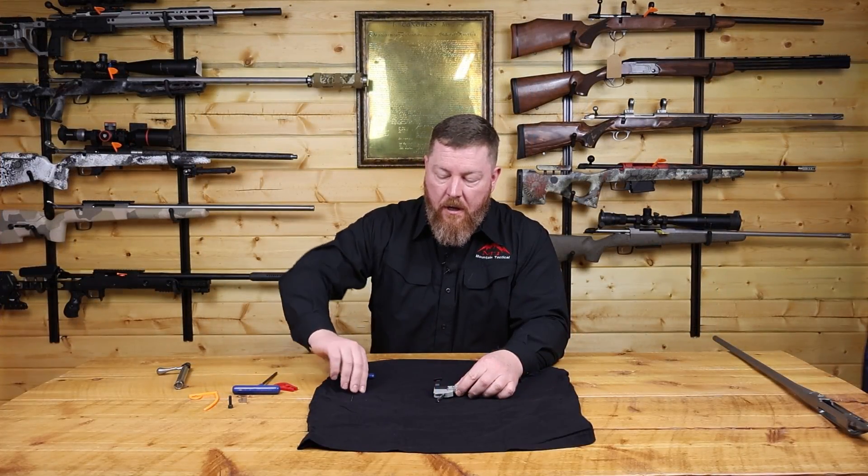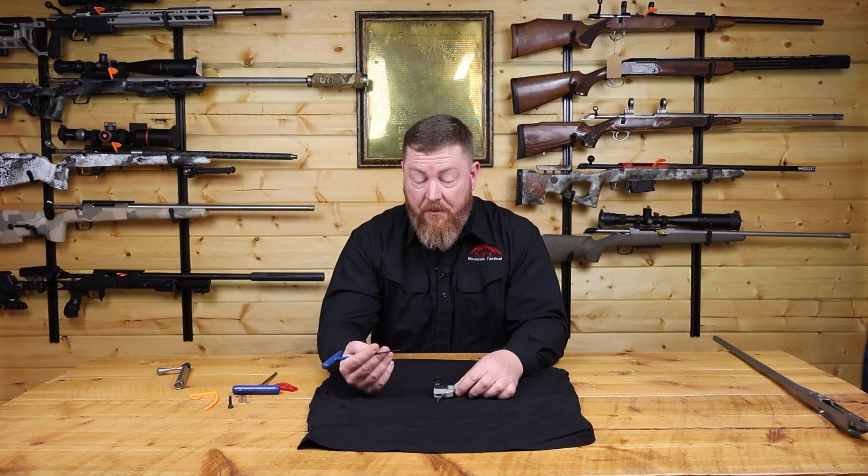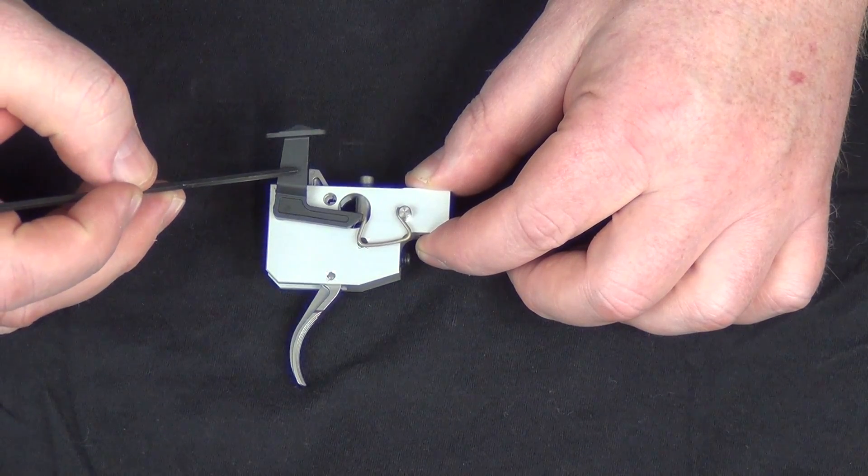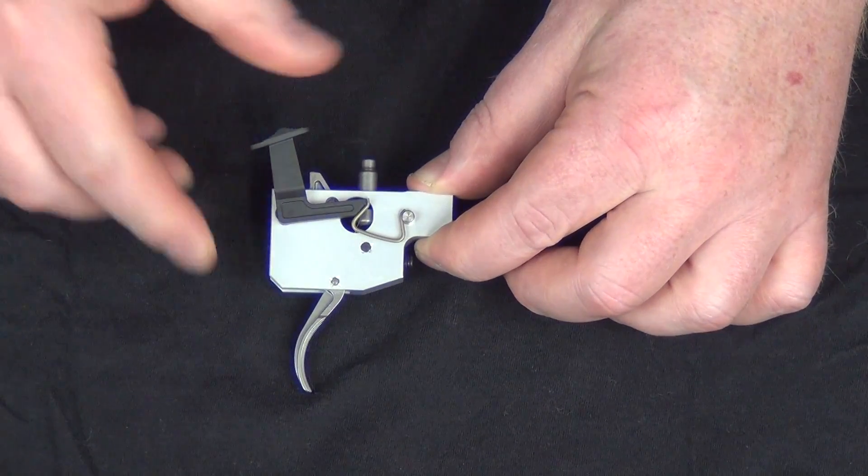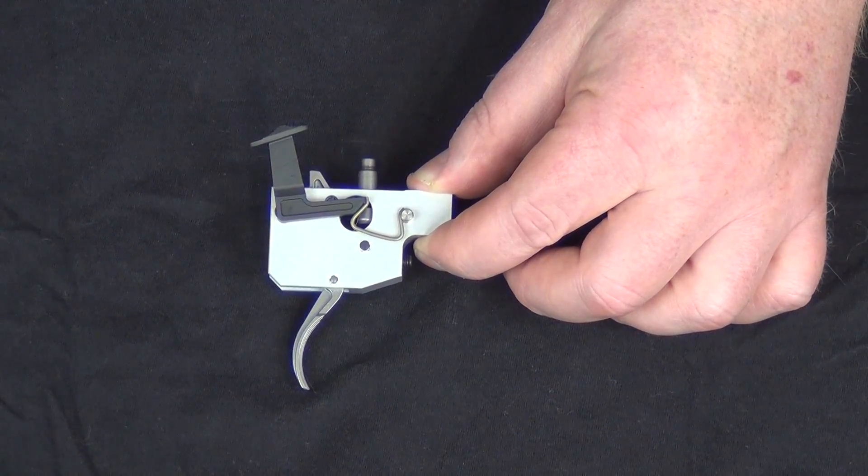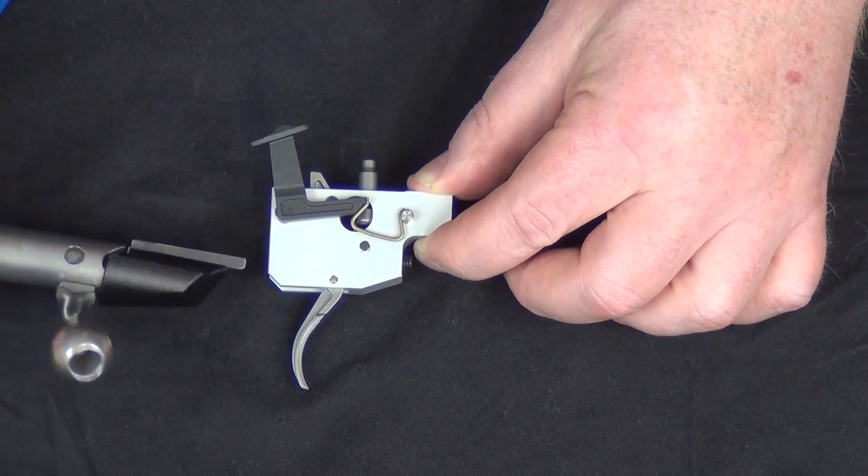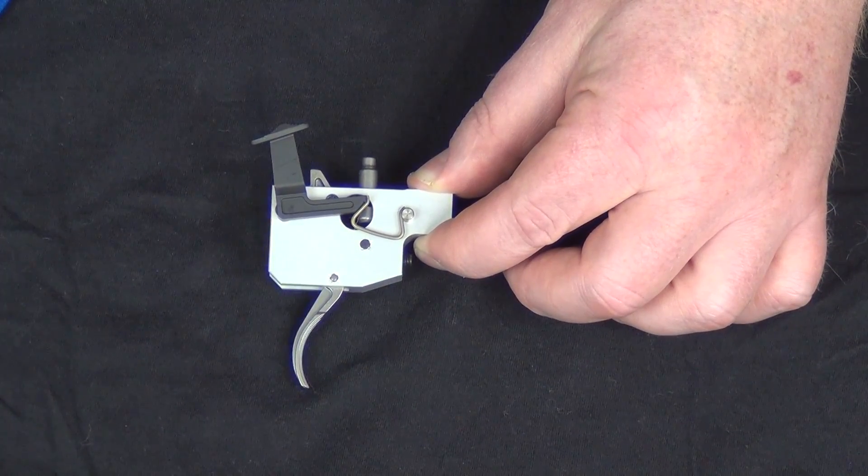So we look at the components that make up the trigger. We have our trigger shoe, that's where your finger goes. We have our trigger safety bar and our trigger safety bar operates the plunger here. So when you put the rifle on safe, you can see the plunger that interacts with the bolt. There's the port that that goes into and locks the bolt shut.